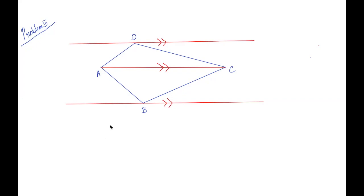We need to construct a rectangle. So what we are going to do is draw a perpendicular on AC that goes and meets the parallel lines. And similarly we do it at point C. So these angles are all 90 degrees, and these angles are also 90 degrees.